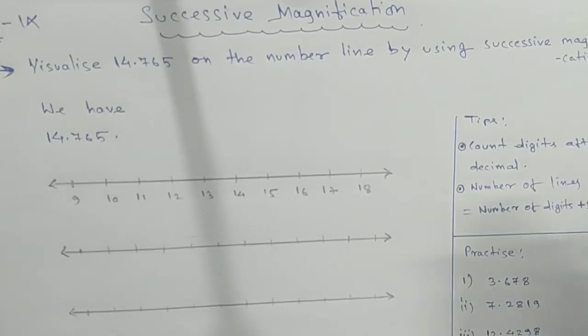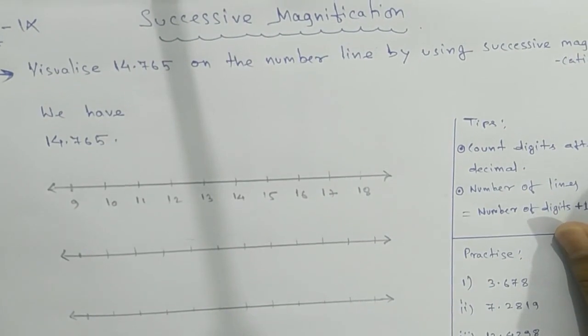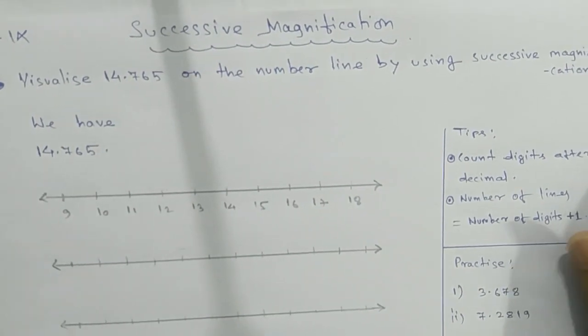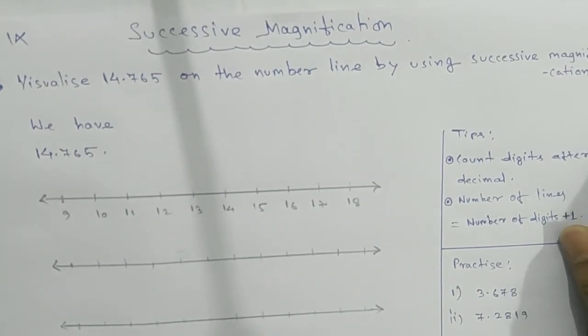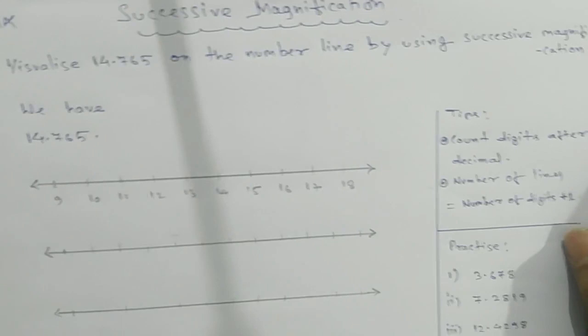Namaste students, today we're going to learn representation of rational numbers on a number line. In decimal form, visualize 14.765 on the number line by using successive magnification. Our topic is successive magnification.